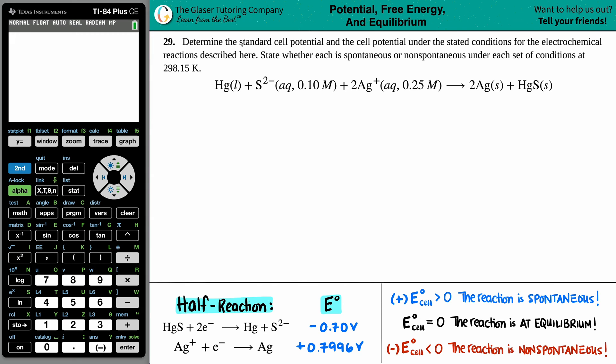Number 29. Determine the standard cell potential and the cell potential under the stated conditions for the electrochemical reactions described here, and then state whether each is spontaneous or non-spontaneous under each set of conditions at 298.15 Kelvin. And then we have our first equation here. In this case, we have to find the standard cell potential and the cell potential of Hg liquid plus S2 minus. They give us that it's 0.1 molarity, and then plus 2Ag plus, they tell me that that is 0.25 molarity, and that will all yield 2Ag solid plus HgS solid.